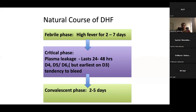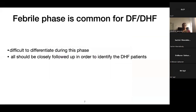During this critical phase, we almost always see plasma leakage, and in addition, these patients have a tendency to bleed. The convalescent phase lasts about two to five days. The febrile phase is the same for both DF and DHF, so it is very difficult to differentiate at the beginning. Therefore, all patients should be closely followed up in order to identify DHF patients.